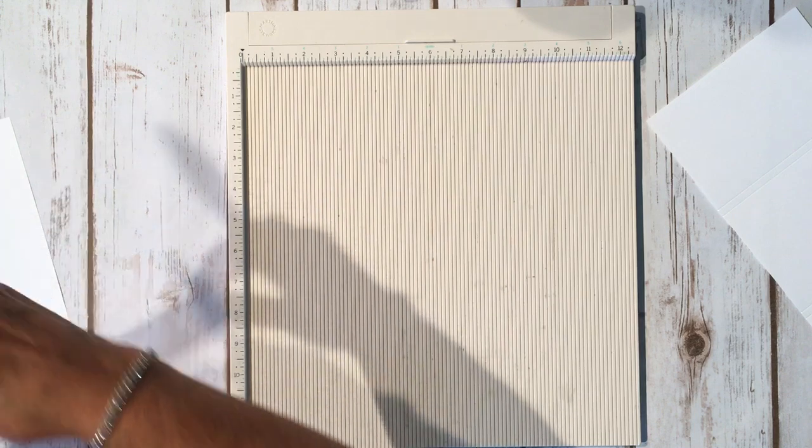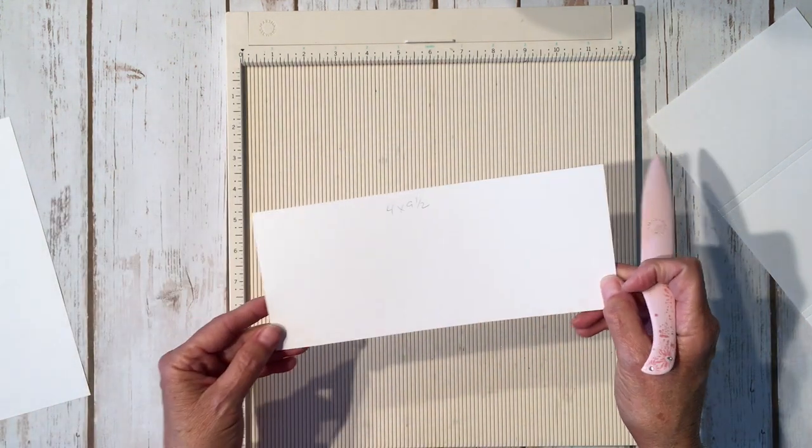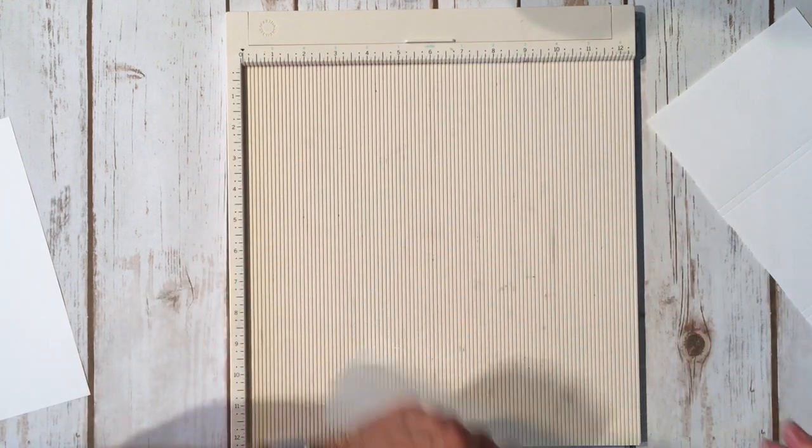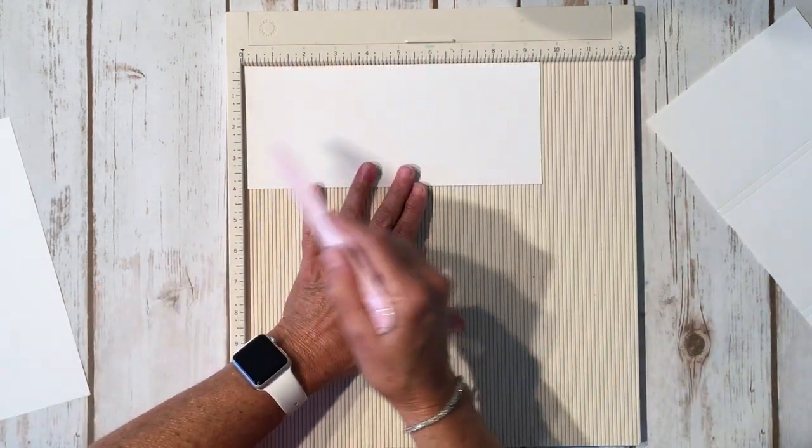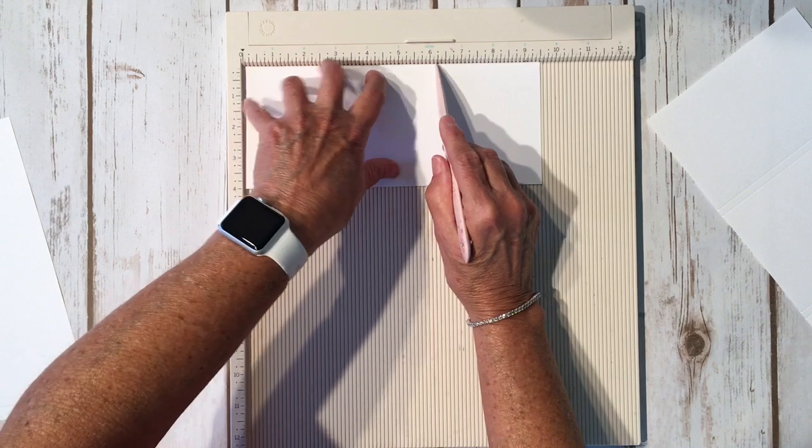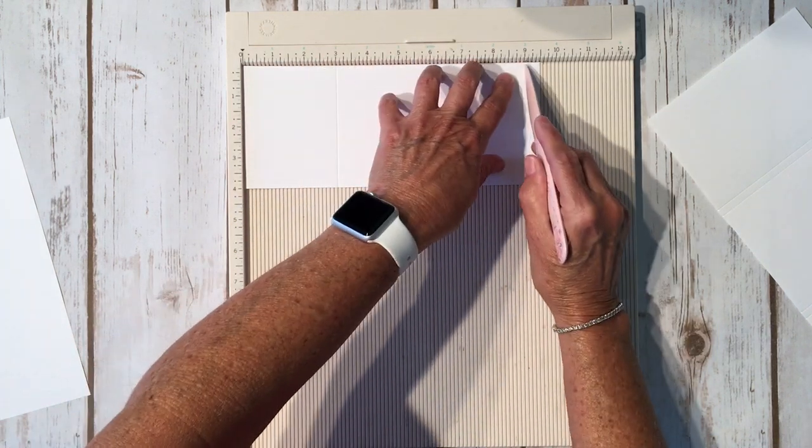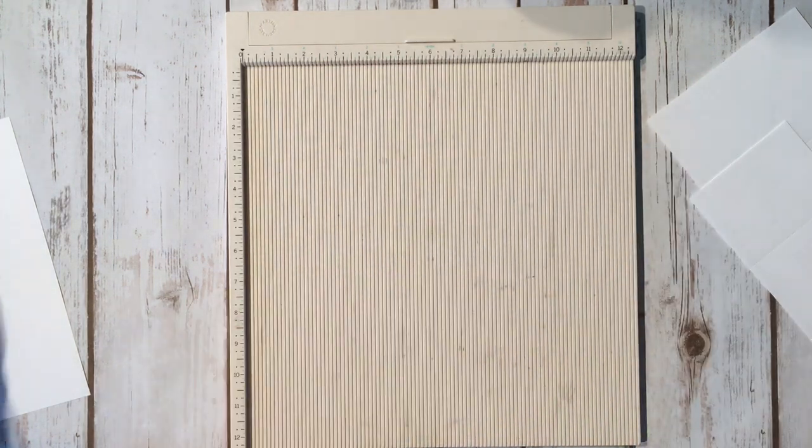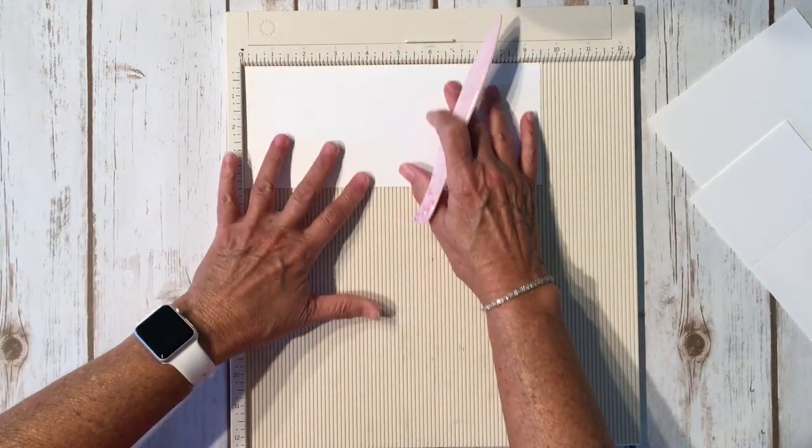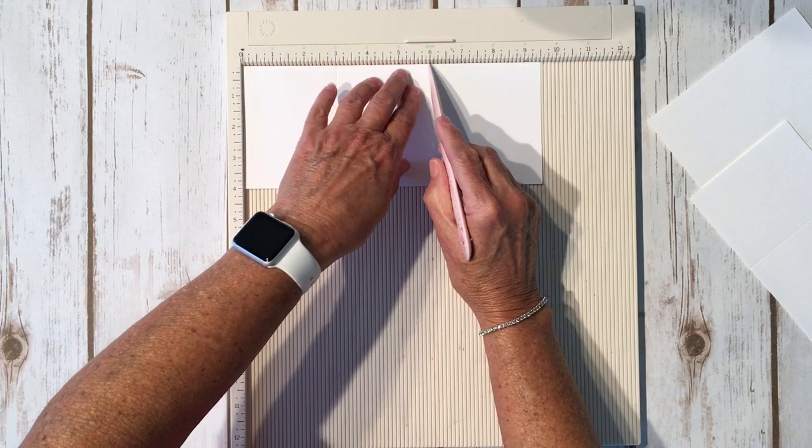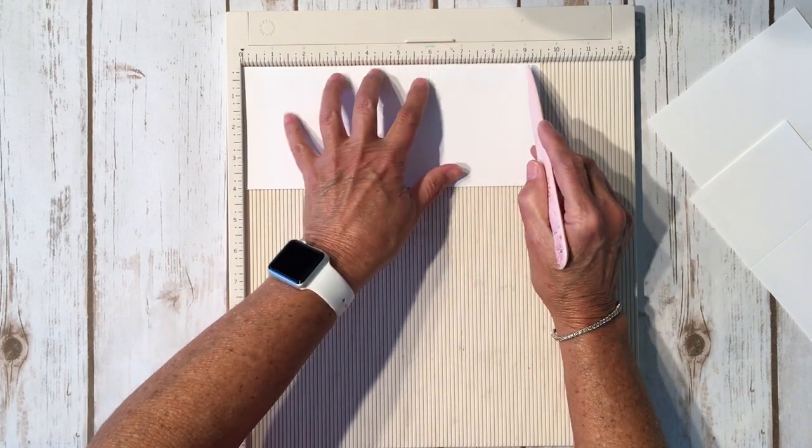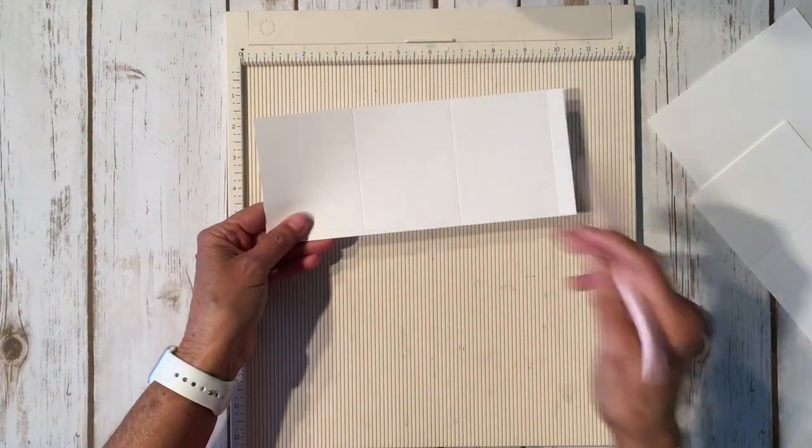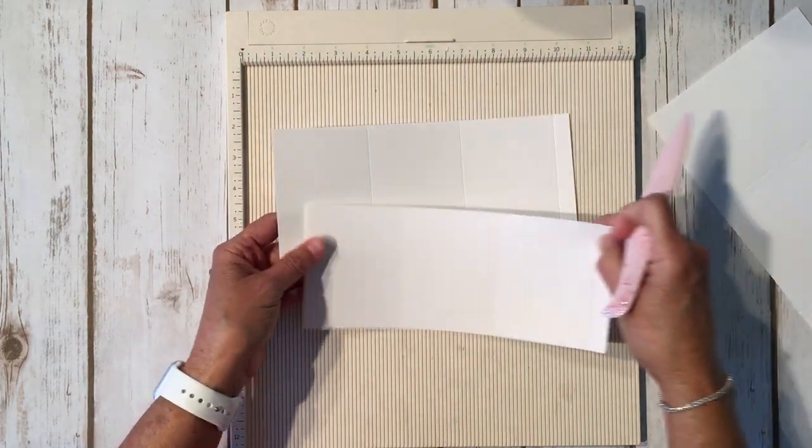Then we're going to go ahead and take our two pieces that are four by nine and a half, and we're going to score at three, six, and nine. So again, we got nine inches here and our four inches here. We're going to go three, six, and nine. Do that to both pieces. I'll put a link to the little project so you can see the video down below in the description box if you want to know what the original one I did looked like. This was a great way to use up scraps.